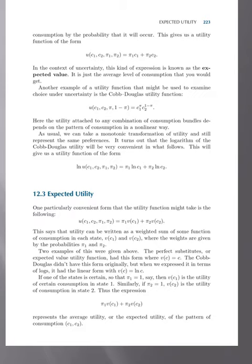The perfect substitutes or expected value utility function has this form where v(c) equals c. The Cobb-Douglas didn't have this form originally, but when we expressed it in terms of logs, it had a linear form with v(c) equals ln c.